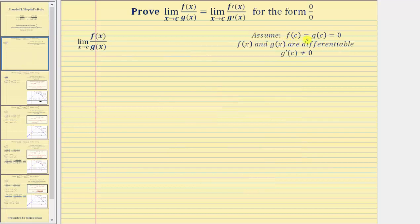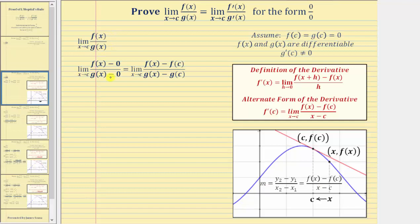To begin, we assume f(c) and g(c) equal zero, f(x) and g(x) are differentiable, and g′(c) doesn't equal zero. Starting with the original limit, we will subtract zero from the numerator and the denominator. The reason we want to do this is because now we can substitute f(c) for zero in the numerator and g(c) for zero in the denominator, because f(c) and g(c) both equal zero.